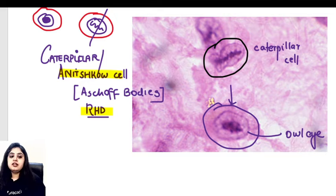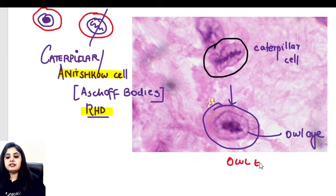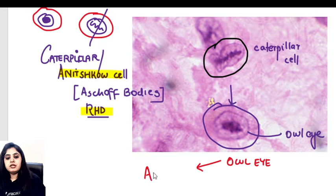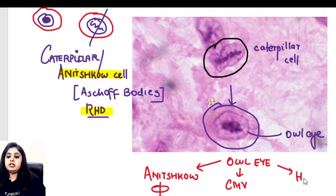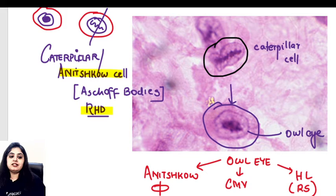Now that we're discussing this, let's finish off all the different owl eyes seen in pathology. The first owl eye is the Anitschkow cell cut in transverse section. The second owl eye is cytomegalovirus, and the third owl eye is the Reed-Sternberg cell in Hodgkin's lymphoma.